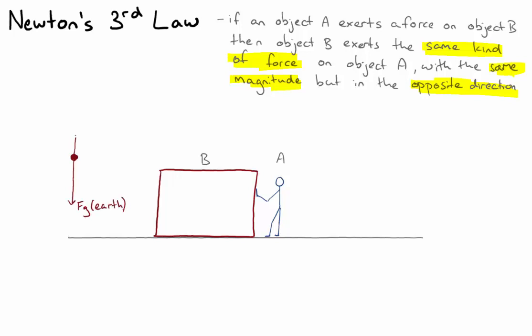We also have a normal force, which we'll call Fn, which is applied by the floor, pushing it up. We can also see that that person is applying a push force in that direction. That push force is from the person.